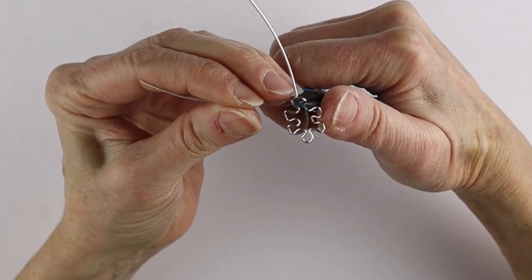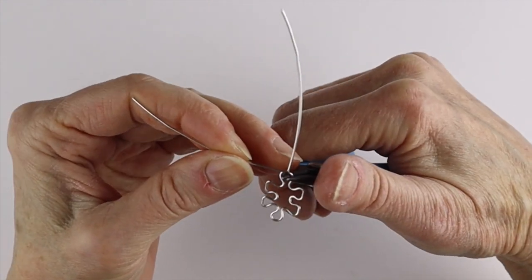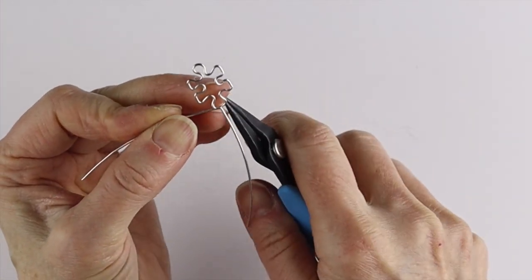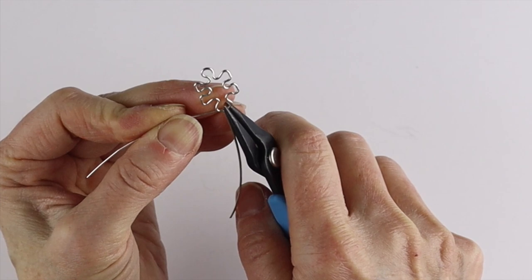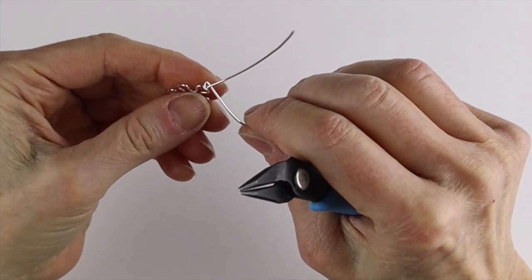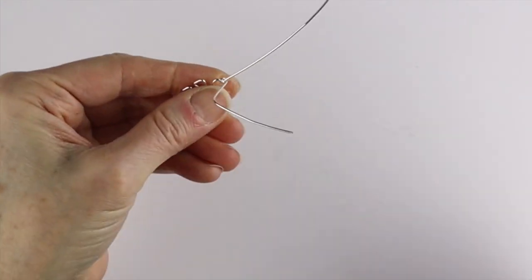So we're just going to finish the loop, bring this to the front, make sure it's somewhat even and then we want to help out the bend so it won't get distorted. Hold this, bring it around, hold this tightly, give it a tug.